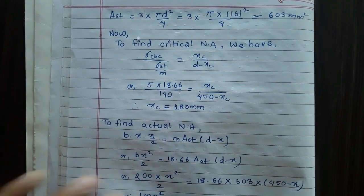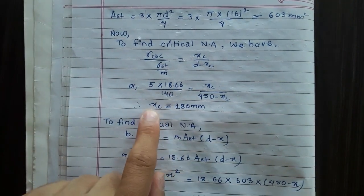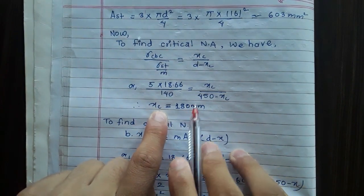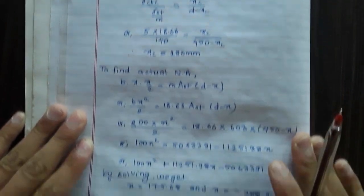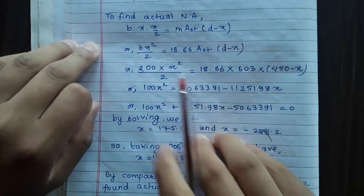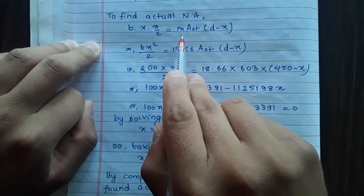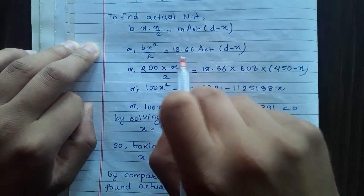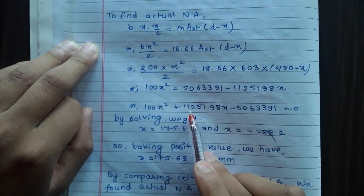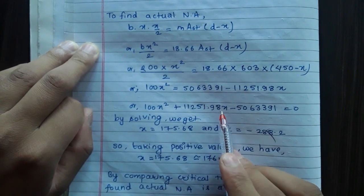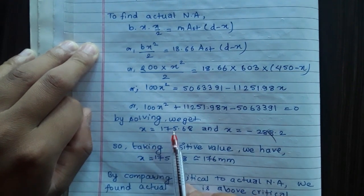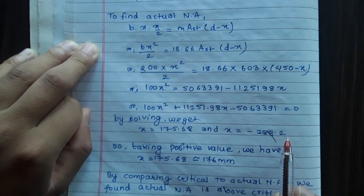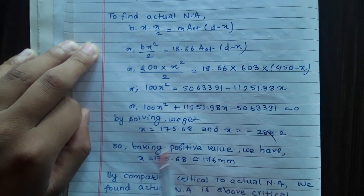To find the actual neutral axis: solving the equation 11,251.98x - 5,063,391 = 0 gives x = 175.68 mm, approximately 176 mm (taking the positive value).